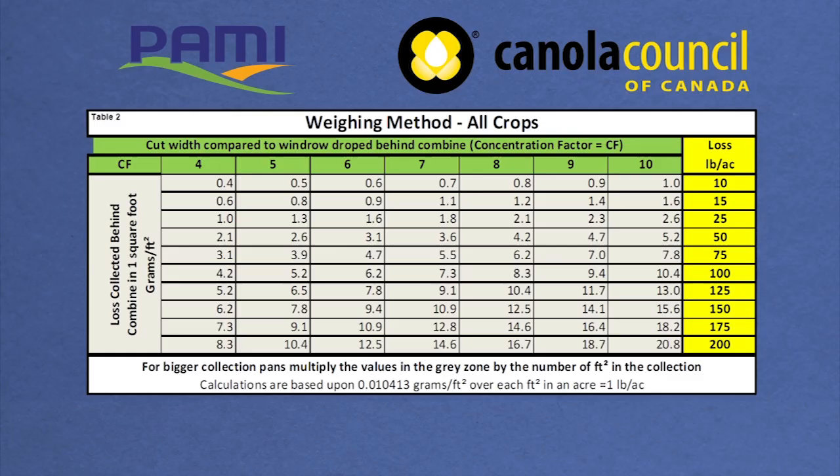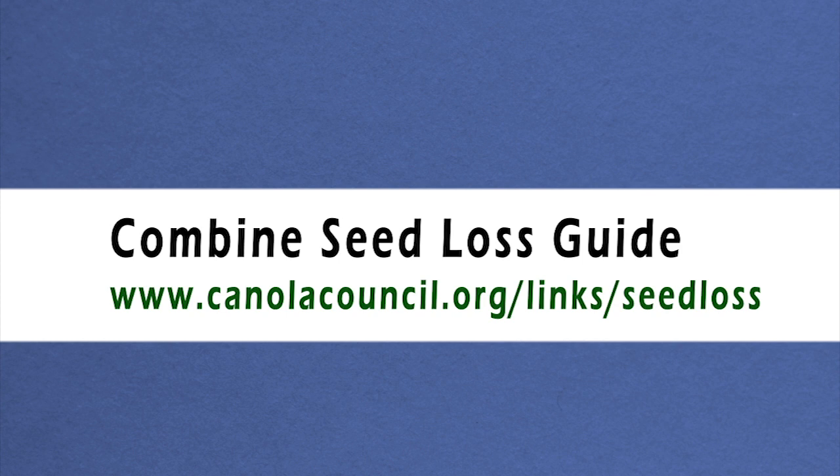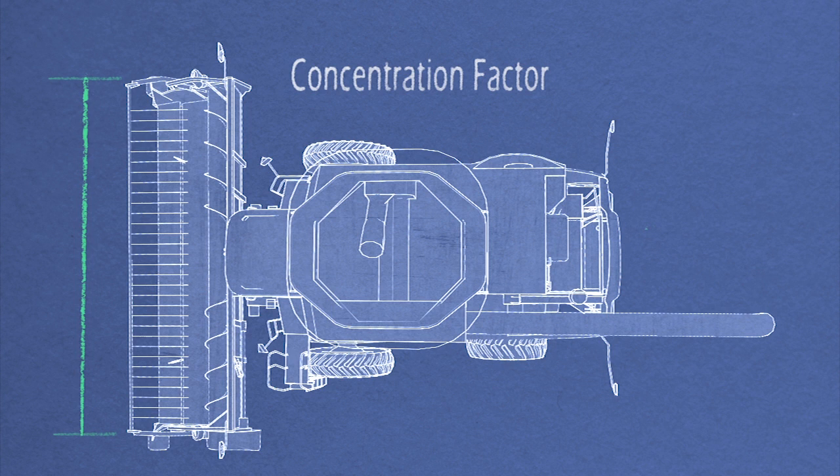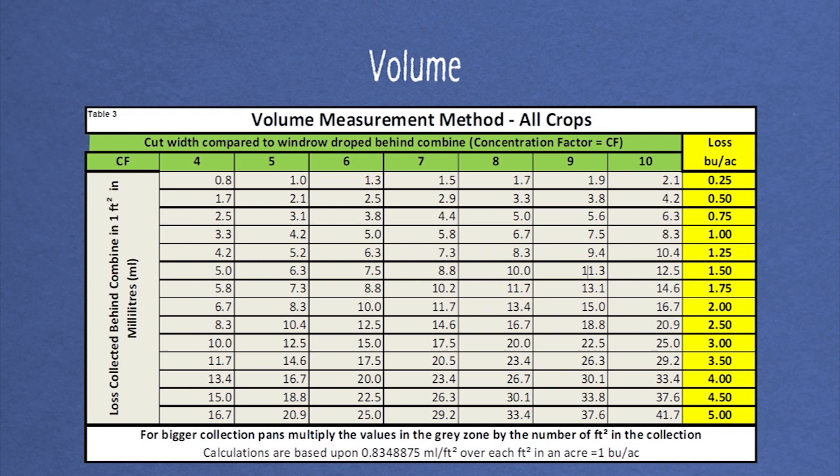If you use the guide, you first need to find your concentration factor, which is the width of your header divided by the width of discharge. The graphs provided for weight or volume can be used. These graphs are based on a one square foot collection area.